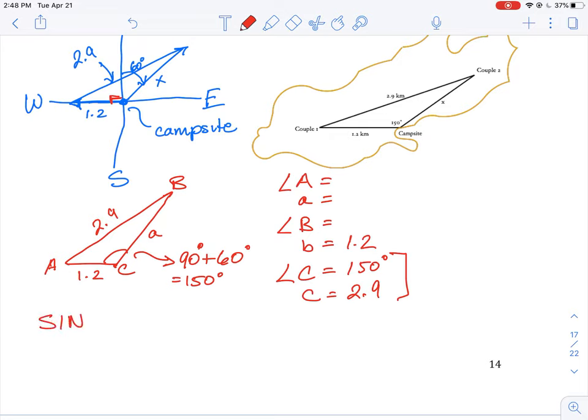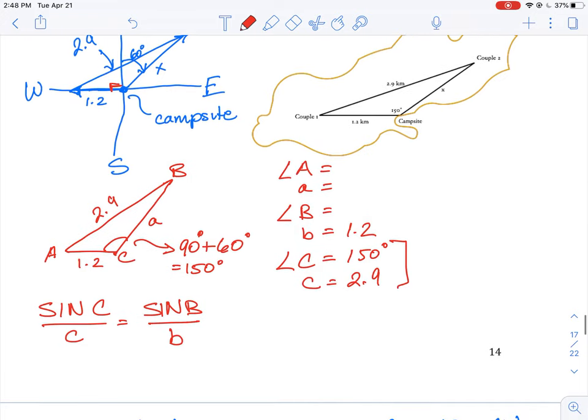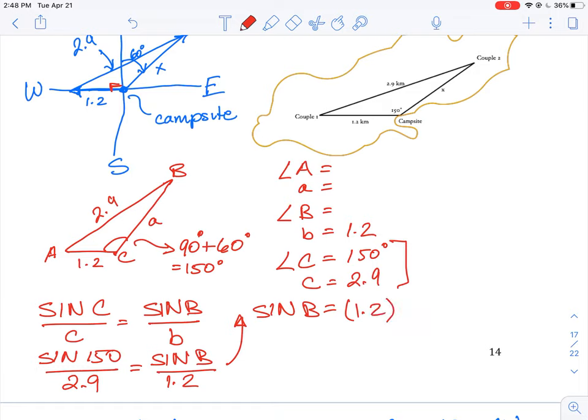So this can tell us that sine C over little c is equal to sine B over little b. Now remember, we do know the complete pair for sine C. So this is going to be the sine of 150 all over 2.9 is equal to sine B all over little b, which we know is 1.2. So now we only have one unknown and we're able to find the solution for this. So if I move this up here, we'll do sine B is equal to, and we just do a cross multiply: 1.2 times sine 150 all over 2.9.